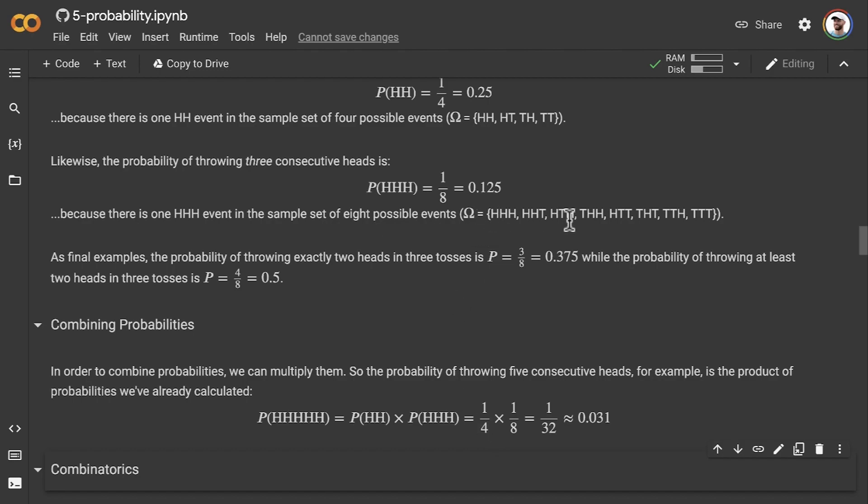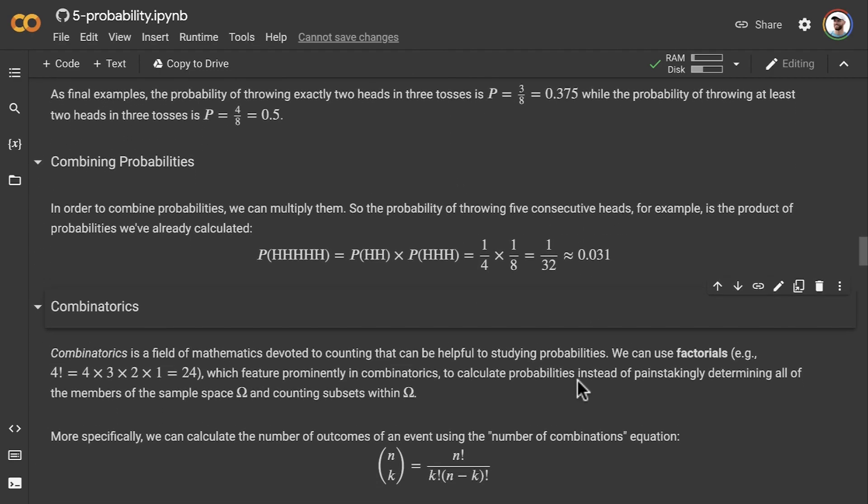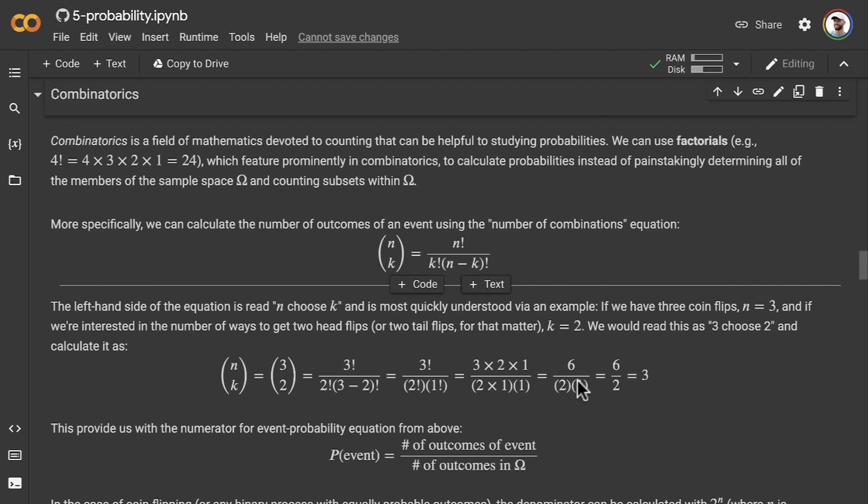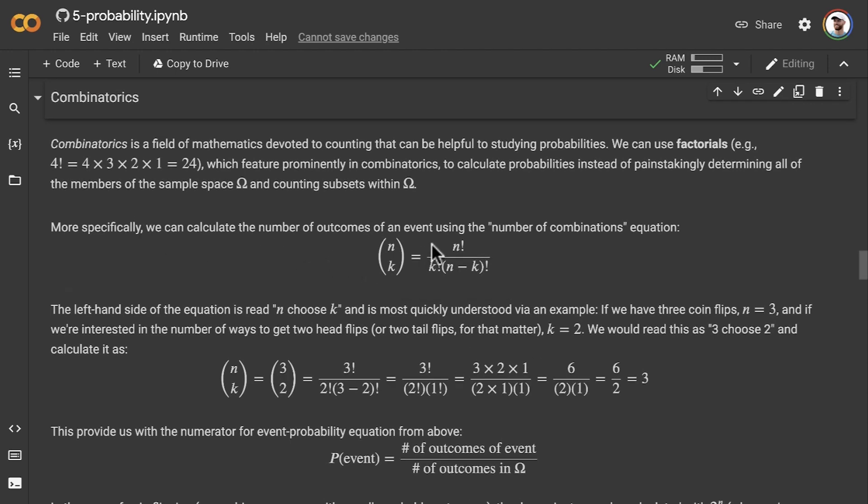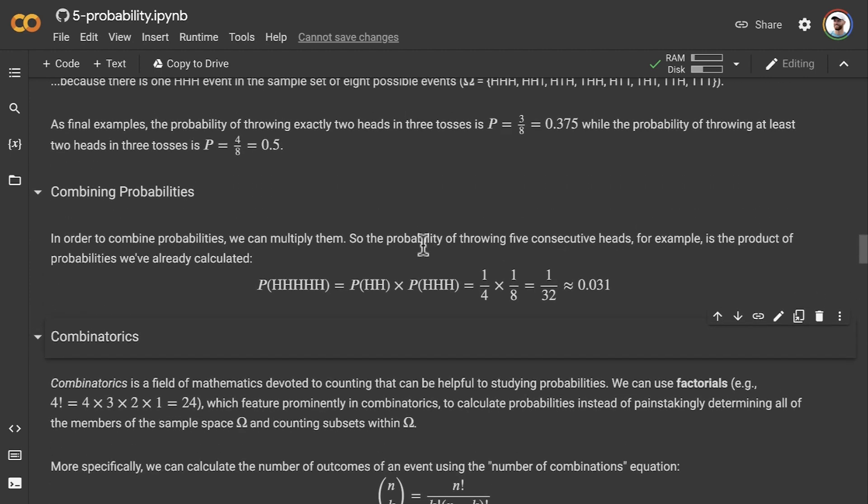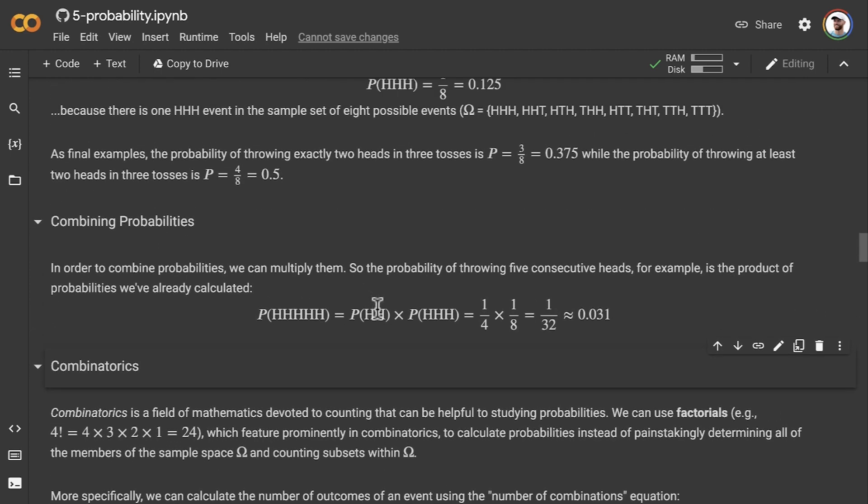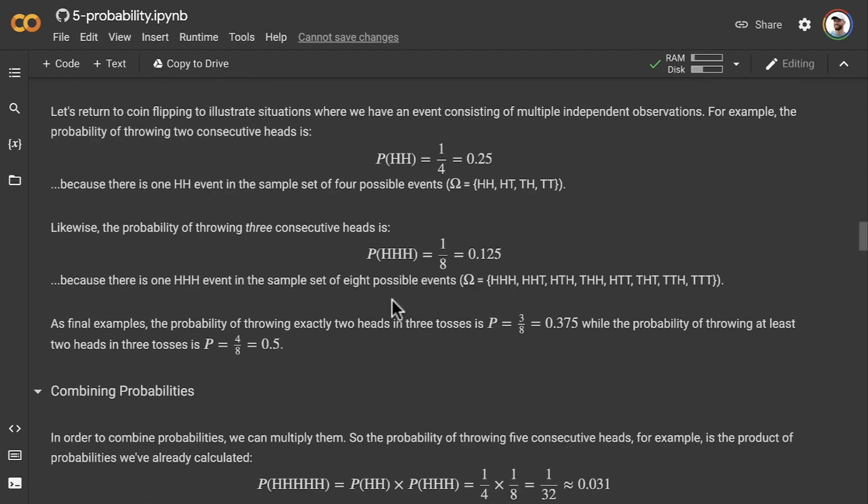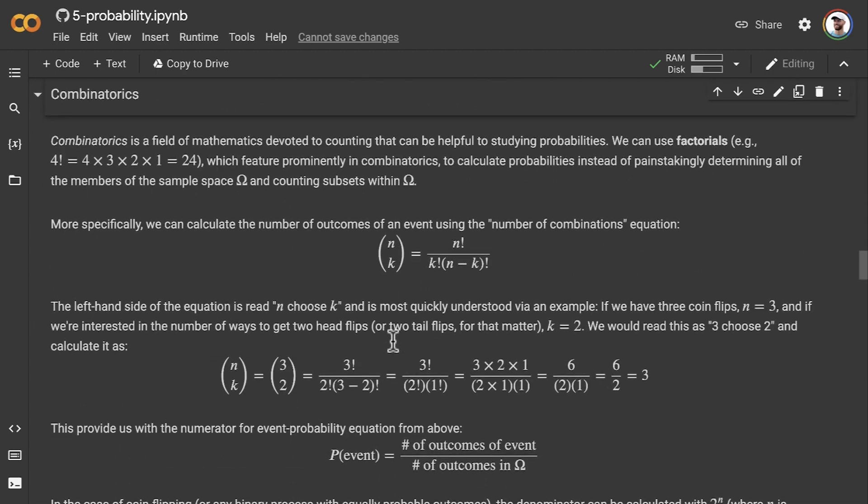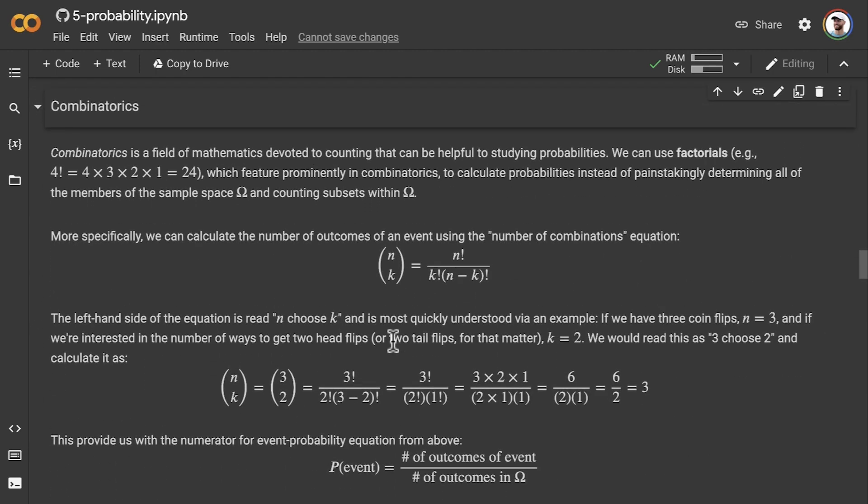Well, combinatorics is a field that allows us to figure this out in more kinds of situations so that we don't have to rely on figuring out the probability of five heads by having already computed the probability of two heads and three heads from the sample spaces themselves. We're trying to avoid having to create those long lists of sample spaces, those big sets.